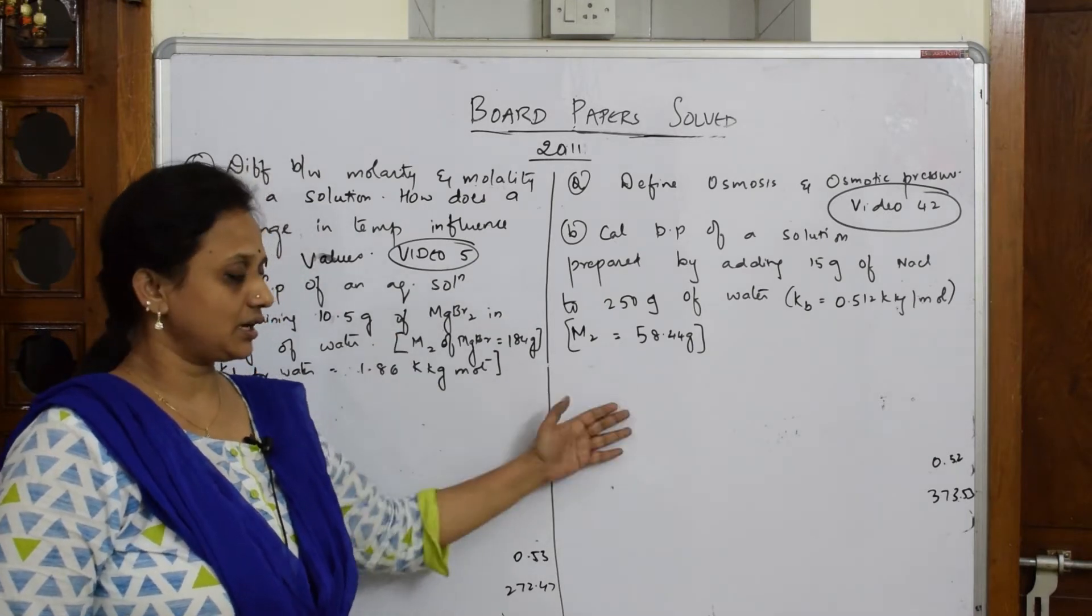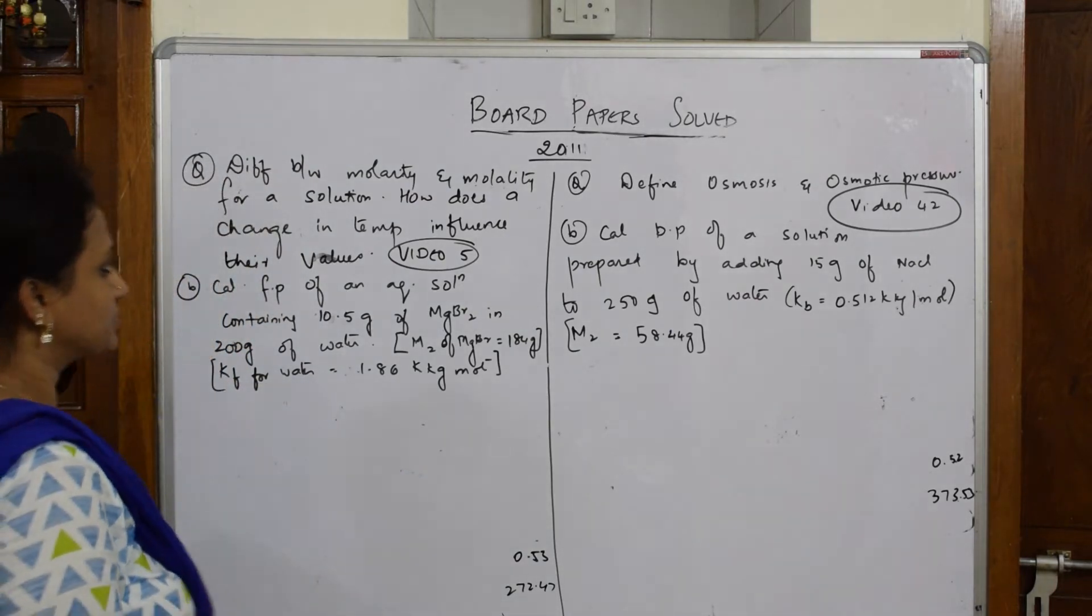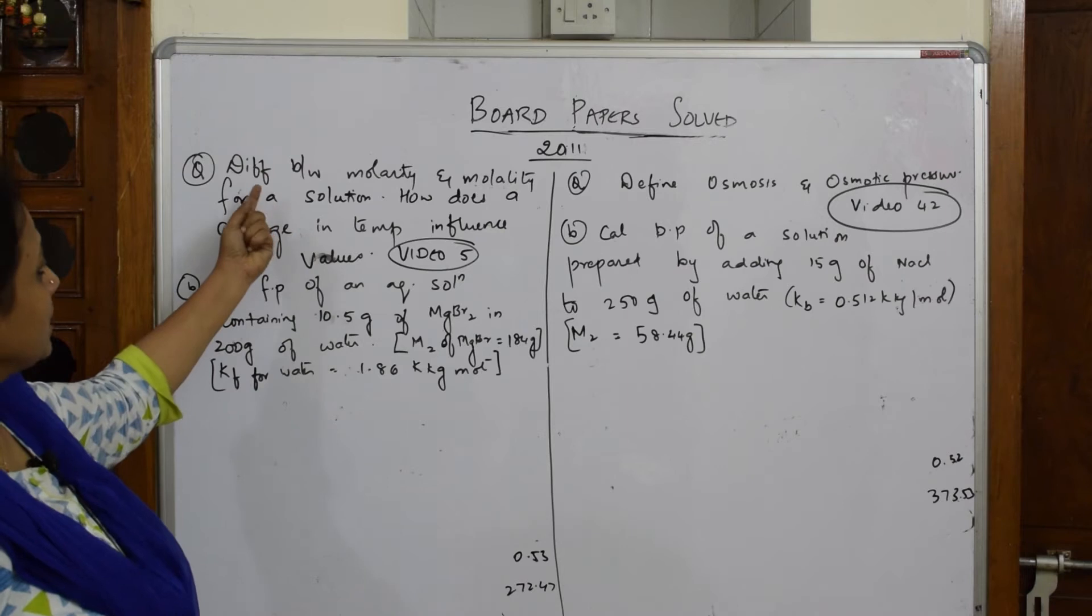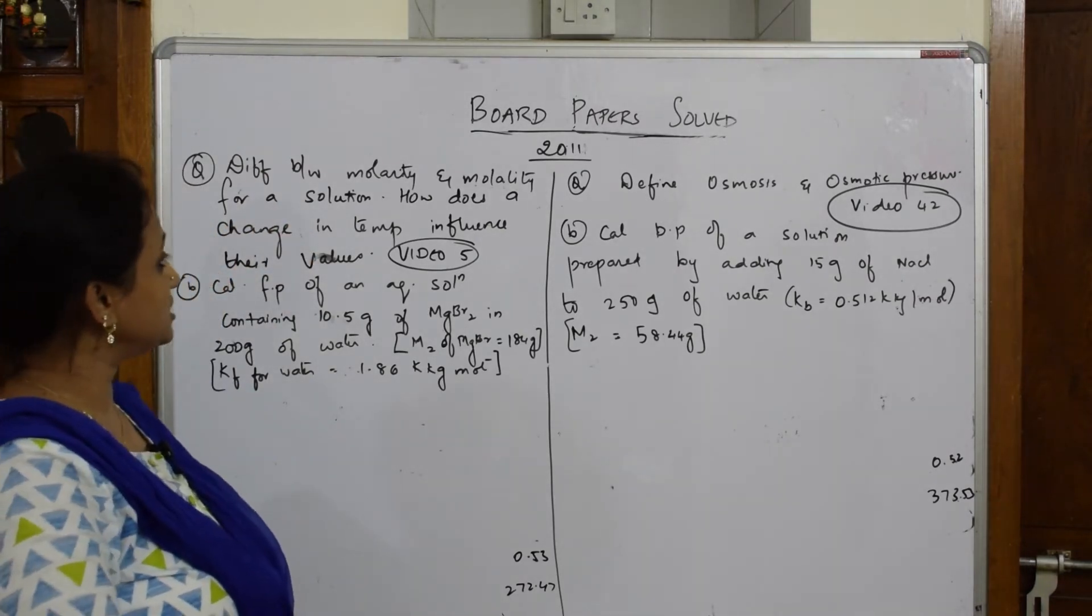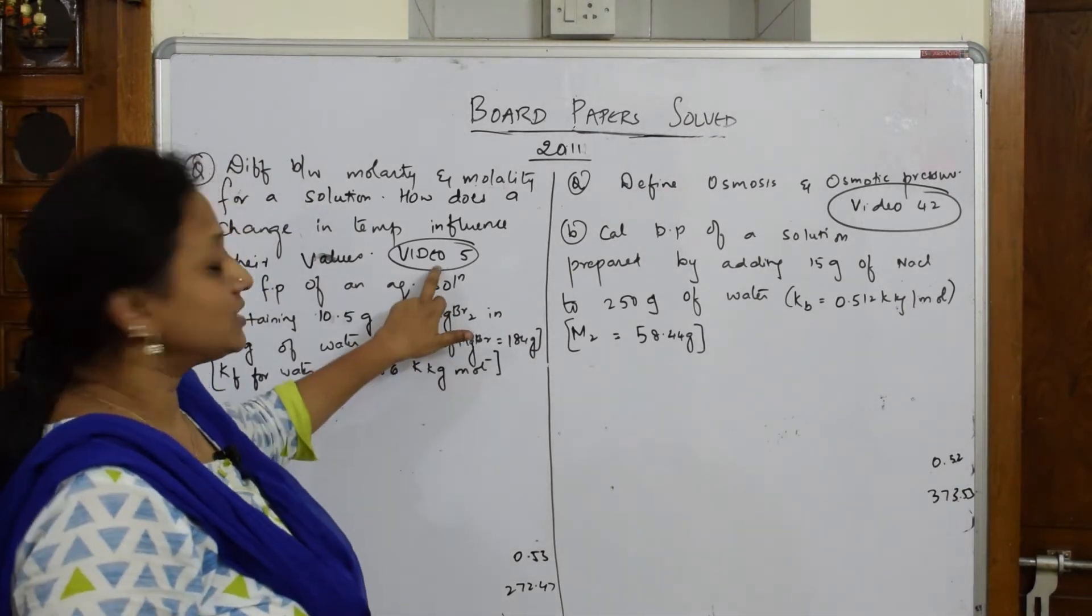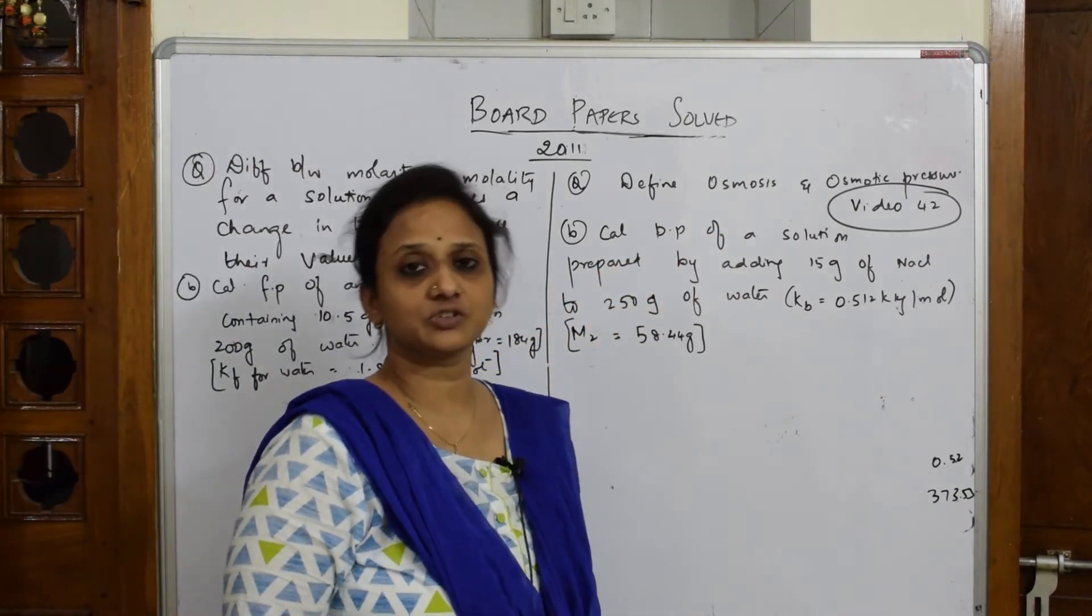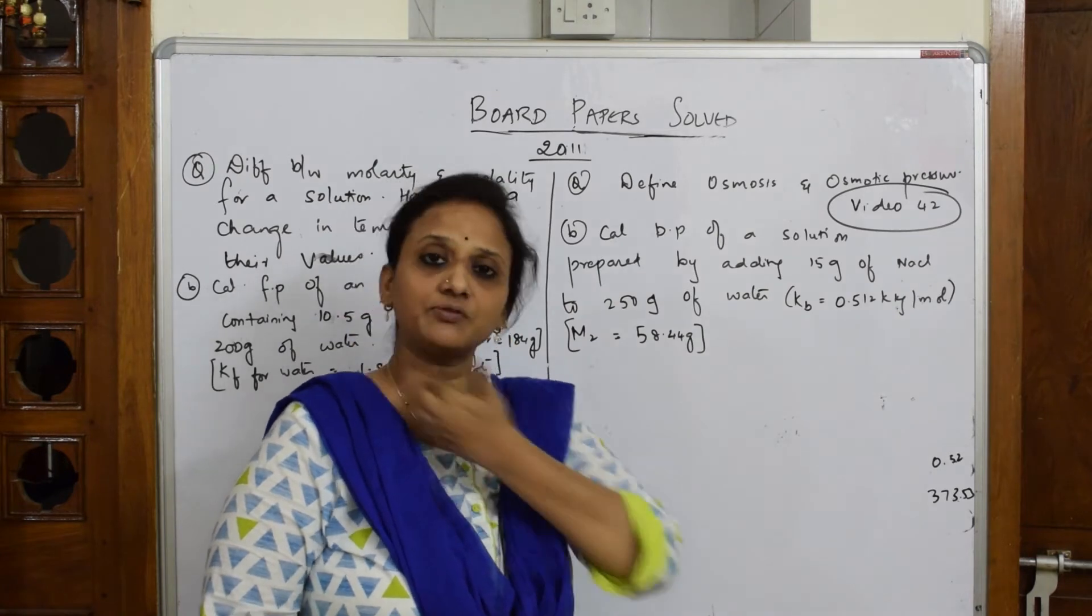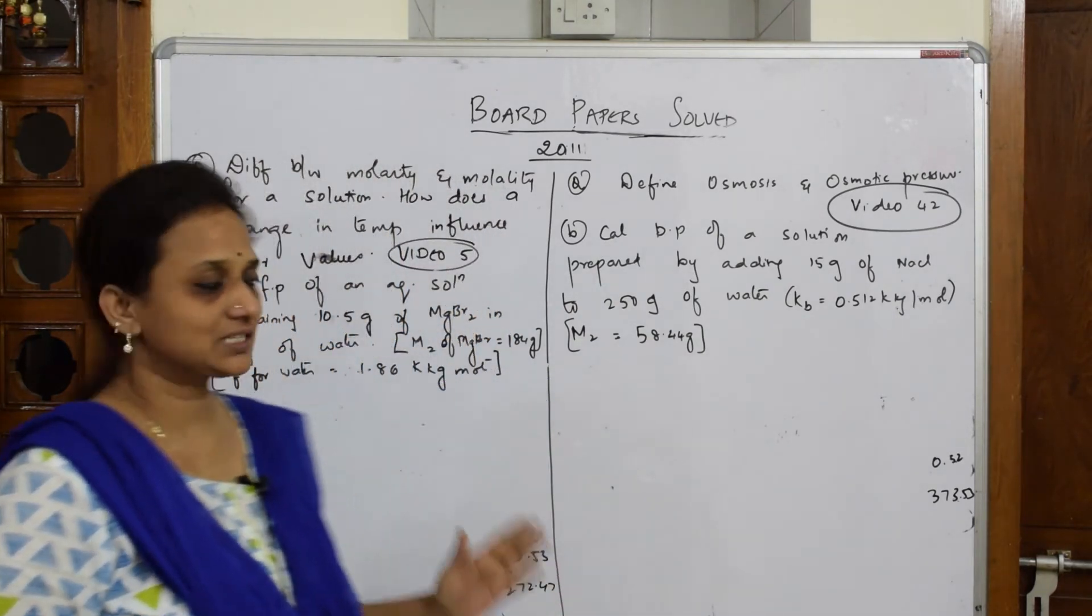Both ebullioscopic constant and cryoscopic constant are given in the same question. It's the same procedure, easiest numerical. The first question asks to differentiate between molarity and molality and how temperature influences their values. I've already done this in video number 5. The next question on osmosis and osmotic pressure is in video number 42. Please watch those videos for clear explanations.